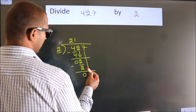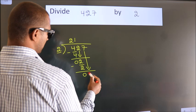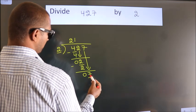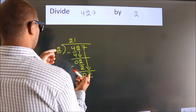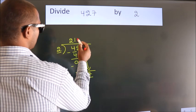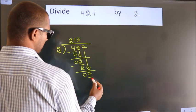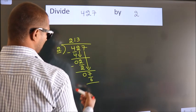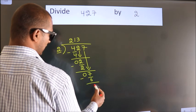After this, bring down the beside number. So, 7 down. A number close to 7 in 2 table is 2 3s, 6. Now, we subtract, we get 1.